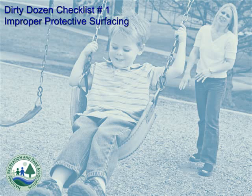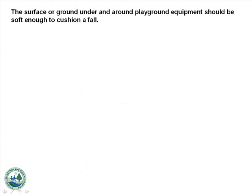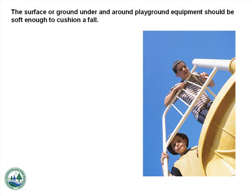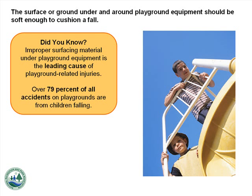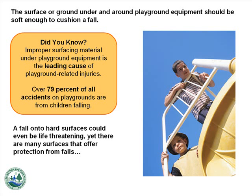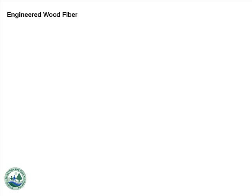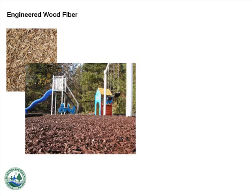Number 1: Improper Protective Surfacing. The surface or ground under or around the playground equipment should be soft enough to cushion a fall. Improper surfacing material under playground equipment is the leading cause of playground-related injuries. Over 79% of all accidents on playgrounds are from children falling. A fall onto hard surfaces could even be life threatening, yet there are many surfaces that offer protection from falls. These include engineered wood fiber and wood chips.